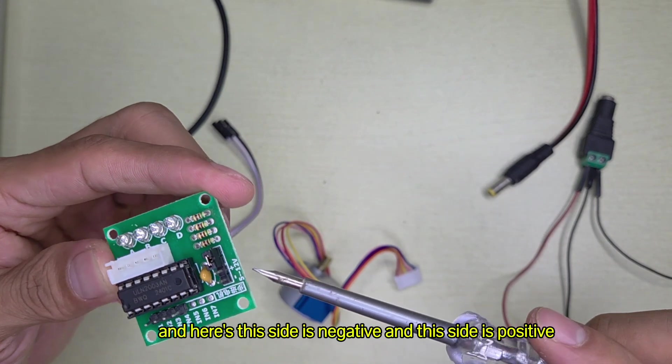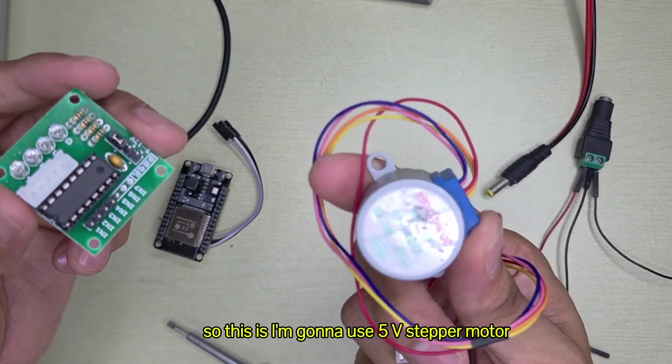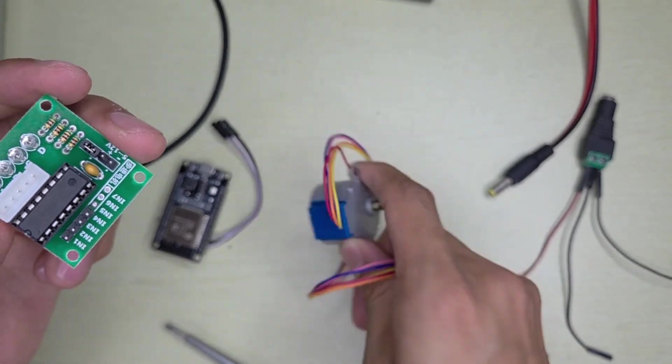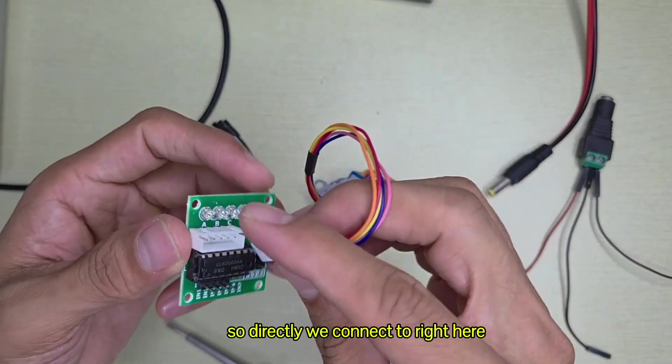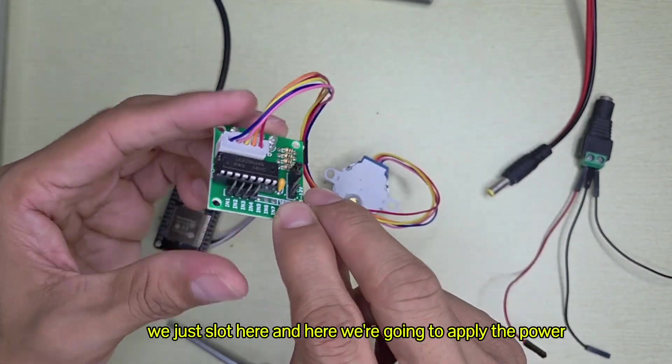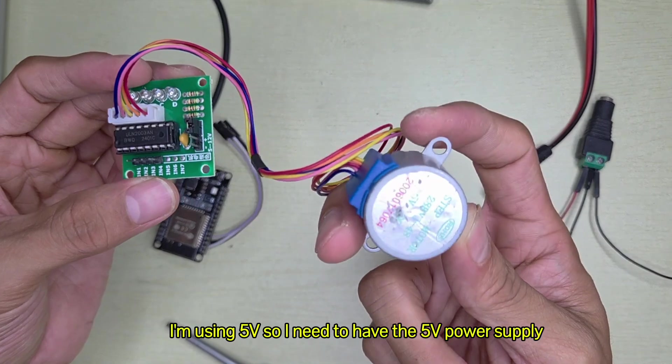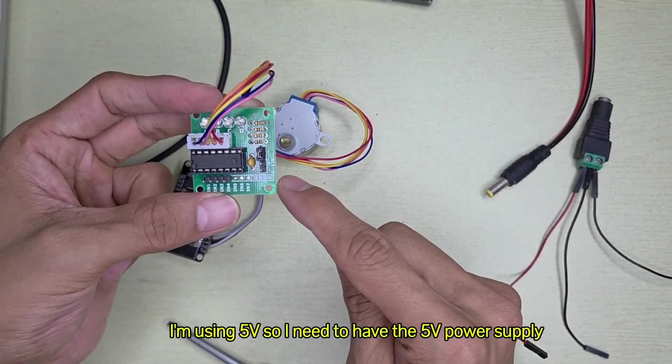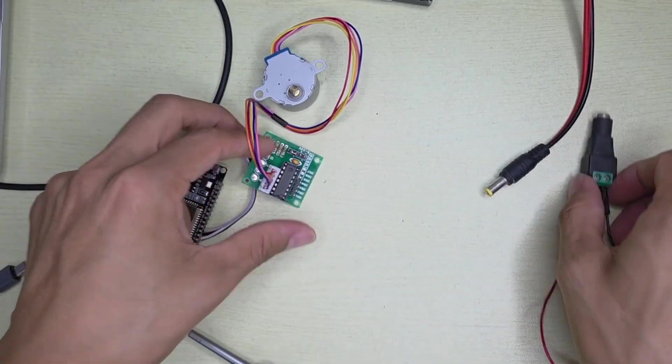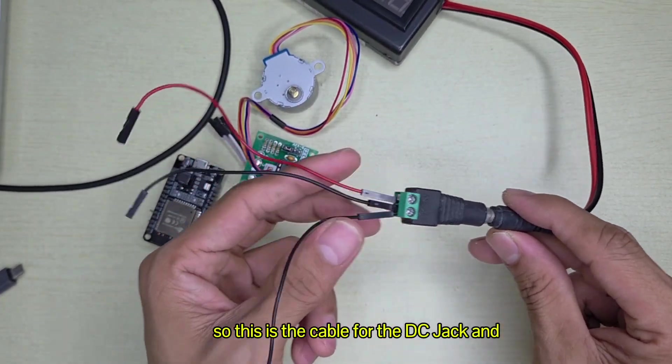Here this side is negative and this side is positive. I'm going to use a 5 volt stepper motor, so we connect the motor relay right here, we just slot it here. And here we're going to apply the power. I'm using 5 volts so I need to have a 5 volt power supply. This is the cable for the DC jack.